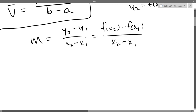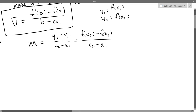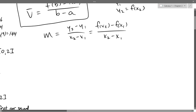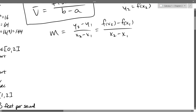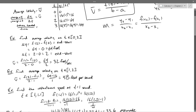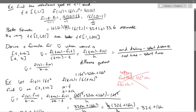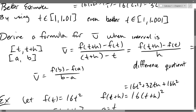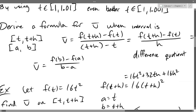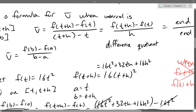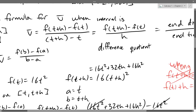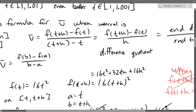After we got that slope, we substituted: instead of a to b, we did t to t plus h, and we simplified our difference quotient or slope down to this difference quotient.